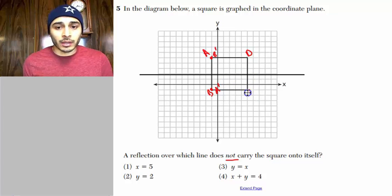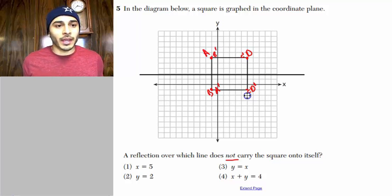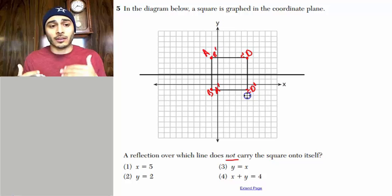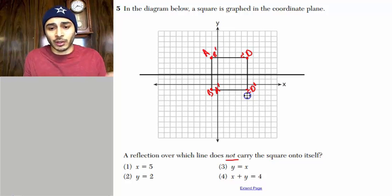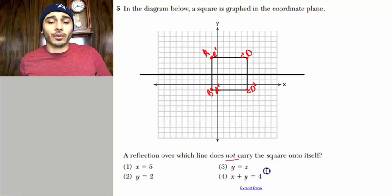And then you can see that C prime is going to be here. And then D prime is going to be here. And then we get the same exact figure, the same exact thing. So what just happened is that the square just mapped onto itself. And then what happened here with Y equals 2, that will be the case for option three and option four.